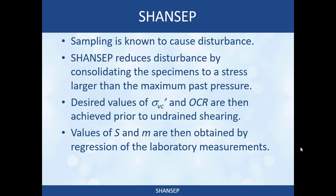By consolidating past the maximum past pressure the soil felt, you can sort of erase the effects of sample disturbance. If there are little cracks or some remolding, once you consolidate past that point, there's been so much volumetric strain that the clay is in a new condition and the effects of disturbance have been erased. Then you consolidate to desired values of sigma VC prime — note the subscript C denotes a consolidation stress in the laboratory device, different from the field stress sigma V0 prime. You consolidate to various values of sigma VC prime and OCR, shear undrained, and measure undrained strength. Using those results, you compute values of S and M by regression.